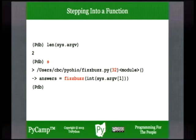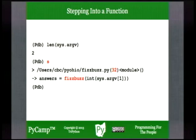We need len(sys.argv) to equal 2 to skip the conditional where the ValueError exception would be raised — we don't want to raise it, we want to see how the program should work. If you have that, you can type 's' and skip over all the statements of the conditional, arriving at line 32 where we're going to call the fizzbuzz function with the second command-line argument converted to an integer, returning a list of strings bound to 'answers'.